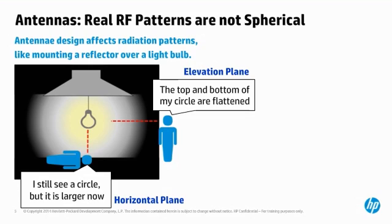This is because additional energy is being radiated downward, making a larger, brighter light from a horizontal perspective. Antenna manufacturers publish specifications on the patterns the antenna makes in the elevation, or E-plane, and the pattern the antenna makes in the horizontal, or H-plane. When you take energy that used to go in many directions and focus more of it in a single direction, this is called gain.